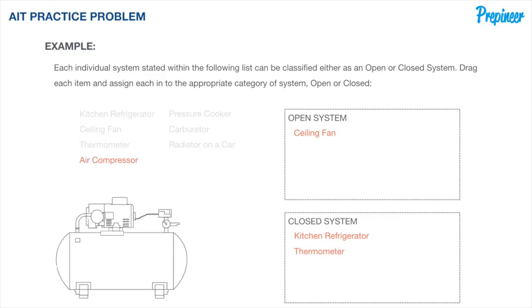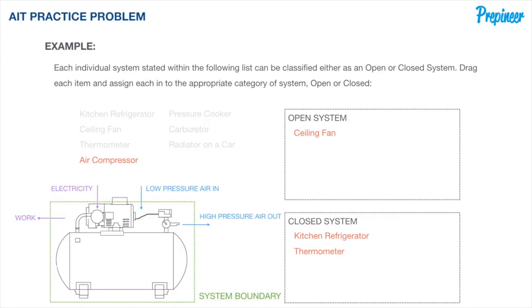Now, what about an air compressor? Here are the system boundaries. An air compressor converts electricity supplied to the compressor motor, which takes in air at low pressure and exerts it back into the environment at higher pressure. With transfer of both matter and energy, a compressor is an open system.